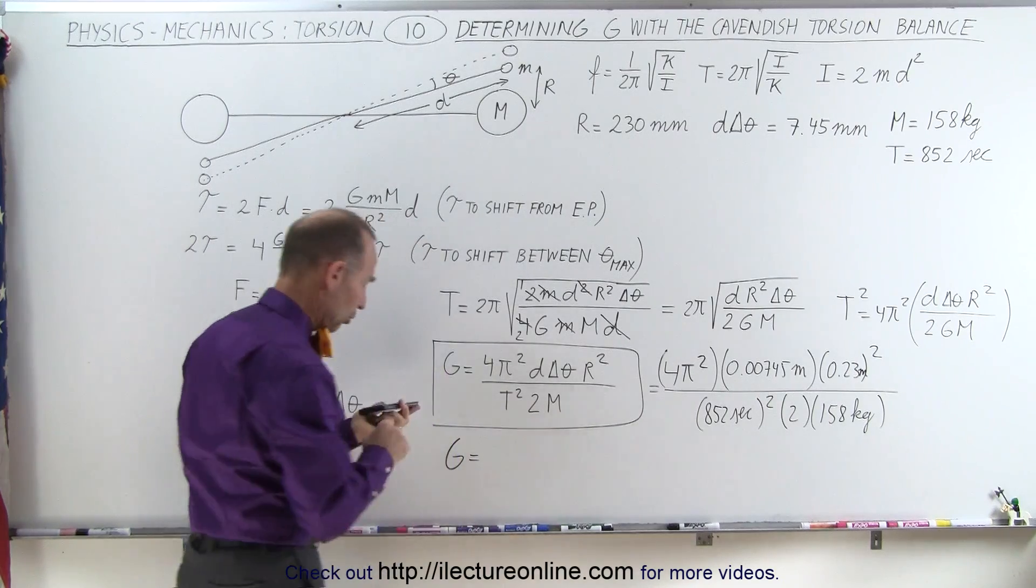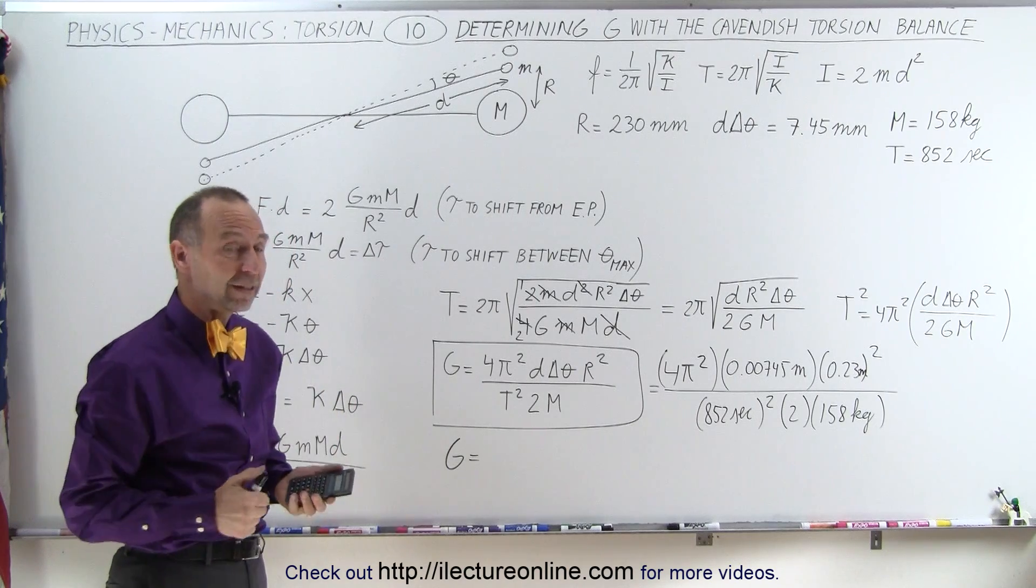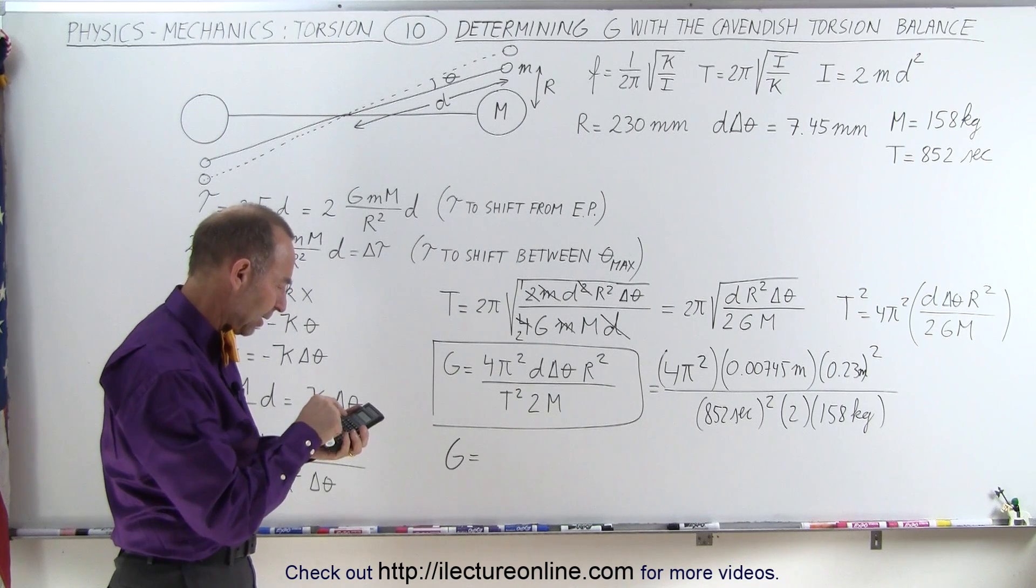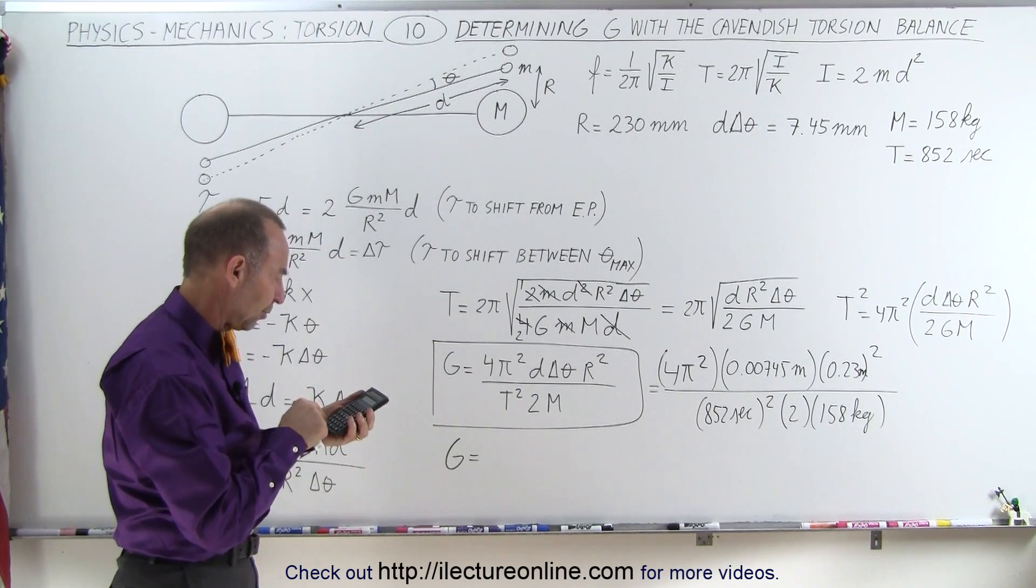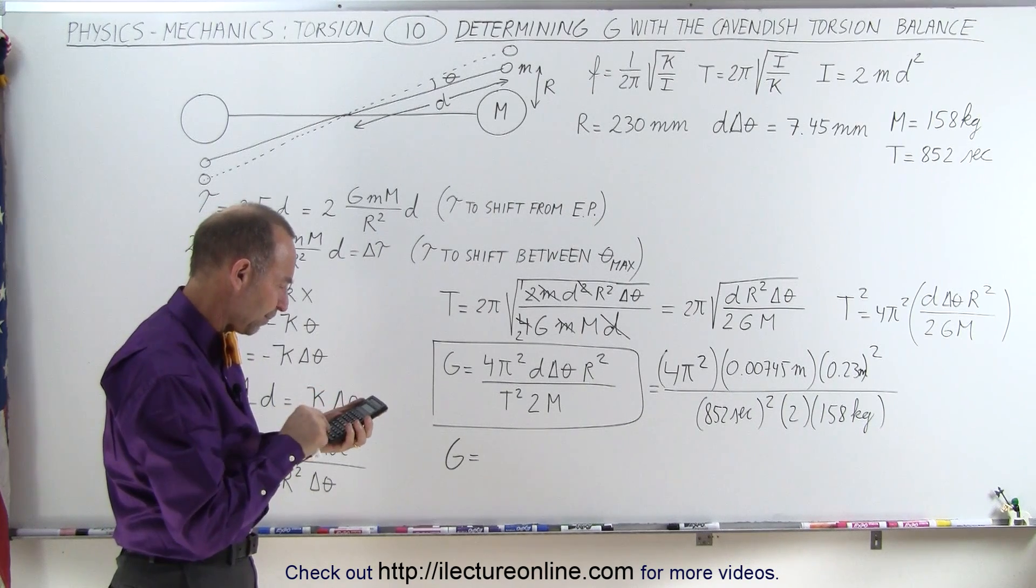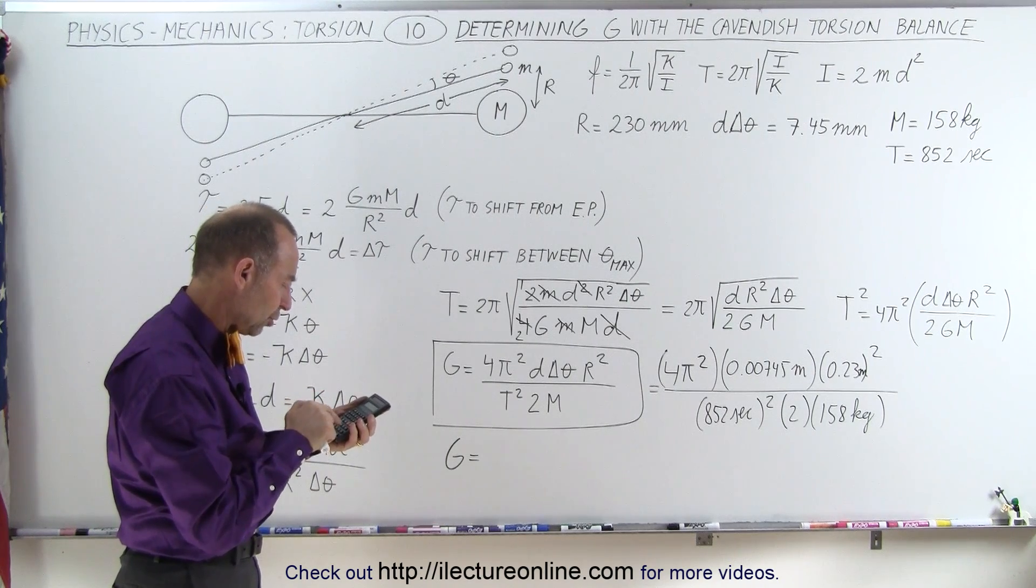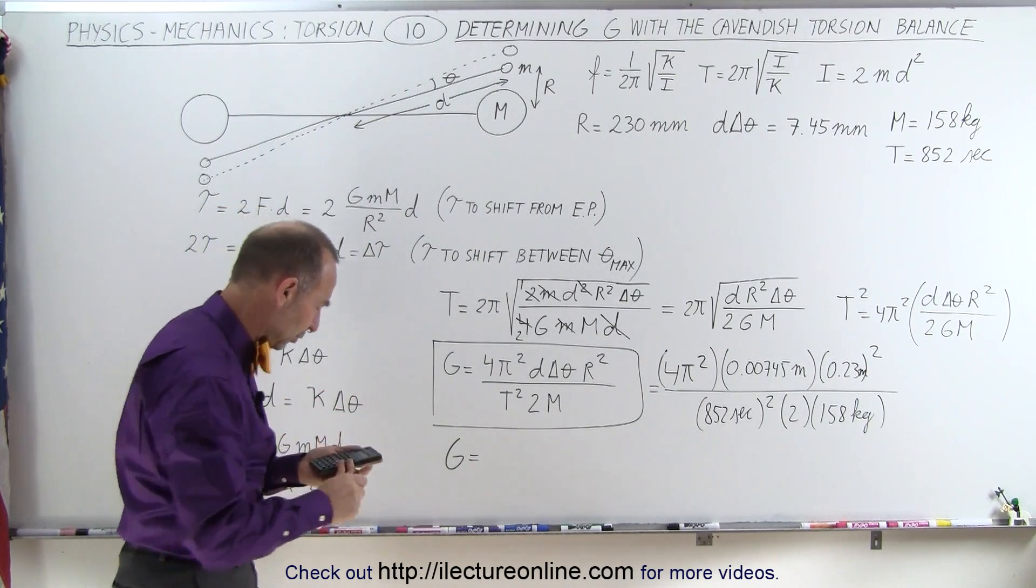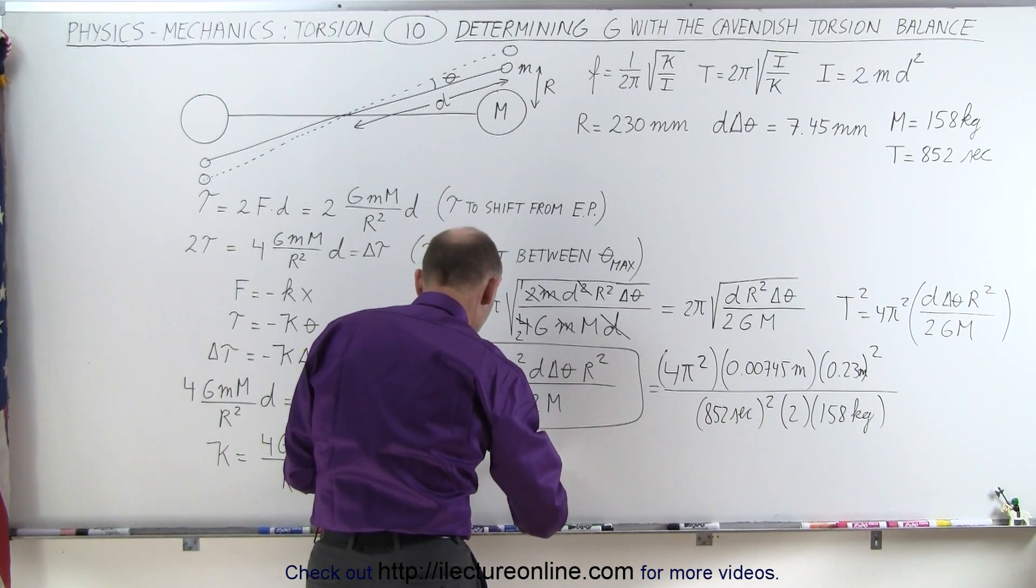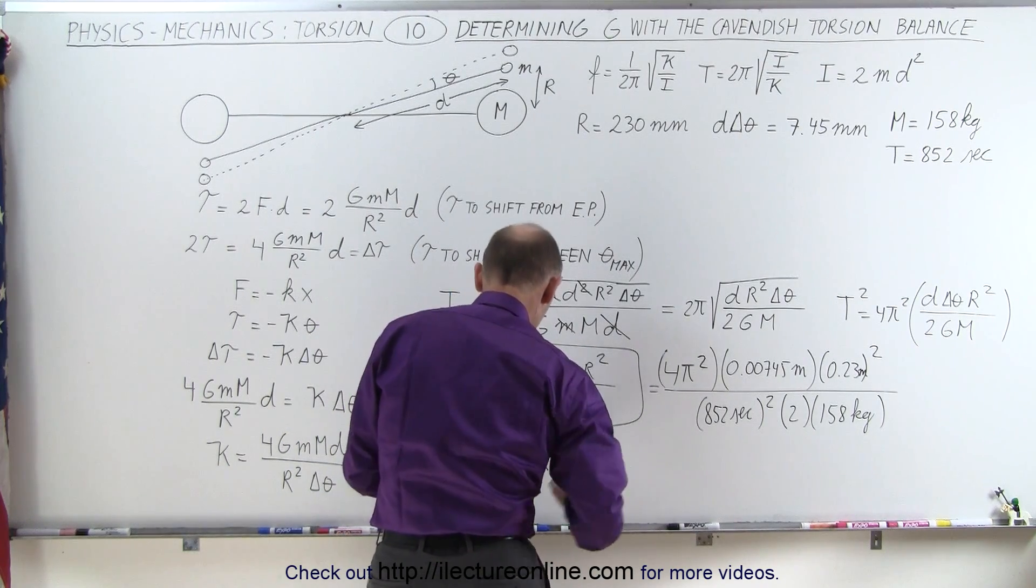So G is equal to... Now, remember from our classes we know that G is 6.67 times 10 to the minus 11. Well, let's see what we get. 4 times pi squared times 0.00745 times 0.23 squared. Divide by 852 squared. Divide by 2 and divide by 158. Notice I end up with 6.78 times 10 to the minus 11.